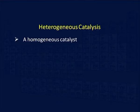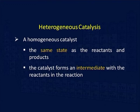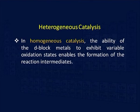The next class is homogeneous catalysis, in which transition metal ions and their compounds also find uses. In homogeneous catalysis, the catalyst and the reactants are in the same state. The catalyst forms an intermediate with the reactant and changes the reaction mechanism to one with a lower activation energy. In homogeneous catalysis, the ability of the D-block metal to exhibit variable oxidation state enables the formation of the reaction intermediate.